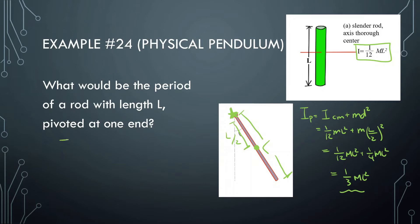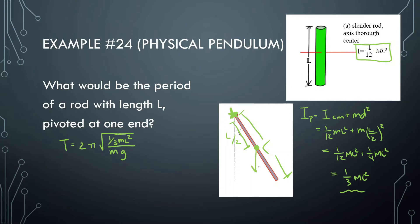Now that we know the inertia, let's find the period. The period equals 2π√(I / (mgd)). The inertia we found is (1/3)mL², divided by mgd. Here d is the distance from the pivot to the center of mass, which is L/2, because what drives physical pendulums to swing is the torque provided by gravity. The masses cancel out and one of the L's cancels out, and this simplifies to: T = 2π√(2L / (3g)).